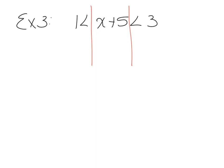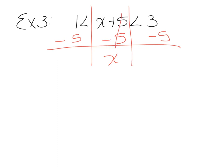The important thing is to balance all three areas. x is isolated in the middle, but whatever you do to isolate x, you must also do on the right and on the left. Subtracting 5 from all three parts isolates x, and the inequality symbols don't change because we only subtracted — we didn't divide by a negative. So the result is: negative 4 is less than x is less than negative 2.